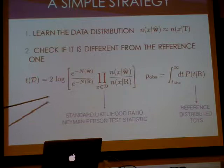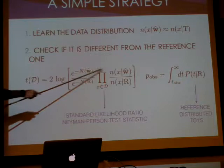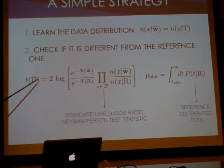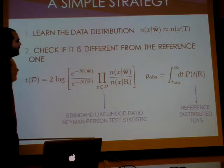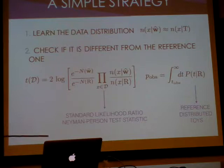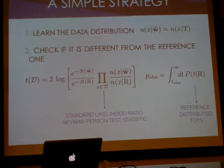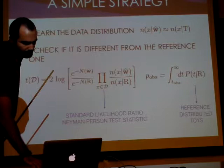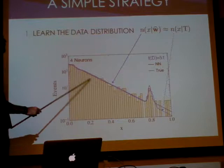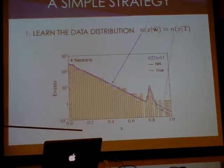The first step of our algorithm or strategy is to have the network learn the true data distribution, or approximate it. The second step: you just want to check if this data distribution is the same as the standard model one, or if it's different. The way we do it is quite standard — for those familiar with hypothesis tests, you build a likelihood ratio. On top you have the data distribution learned by the network; on the bottom, the standard model. You use this as a discriminating variable and compute the observed value of this variable.